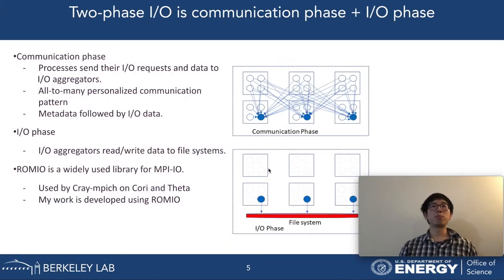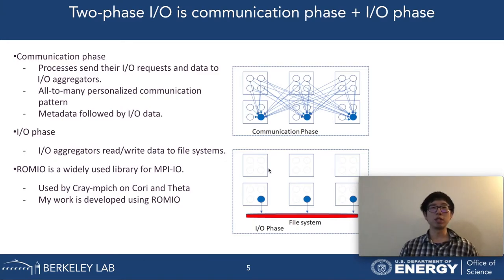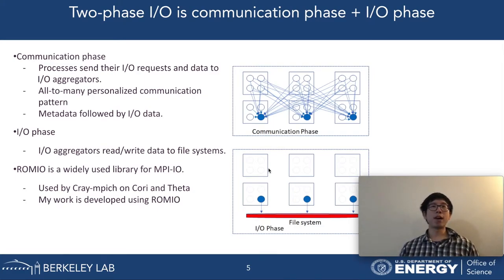Two-phase I/O is a widely used design for parallel I/O. By its name, it consists of two stages. The first stage is called the communication phase, where all processes send their I/O requests to a subset of processes called I/O aggregators, denoted by the blue dots in the figure. Later, in the I/O phase, I/O aggregators perform I/O operations with the underlying file system using the aggregated I/O requests.